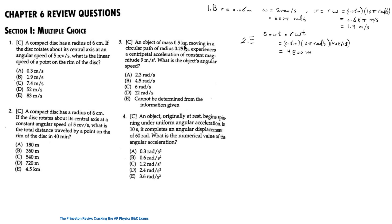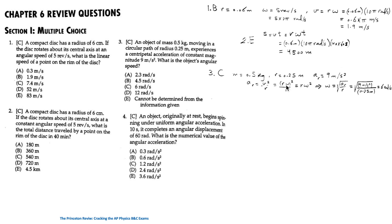For question 3, an object of mass 0.5 kg moves in a circular path of radius 0.25 meters and experiences a centripetal acceleration of constant magnitude 9 m/s². What is the object's angular speed? The centripetal acceleration equals rω², so the angular speed is the square root of centripetal acceleration over radius, giving 6 radians per second. The answer is C.